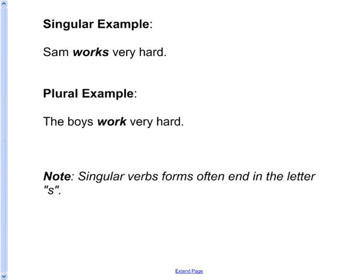Let's look at some examples. First, a singular example: Sam works very hard. In this sentence, works is the main verb and Sam is the subject. Sam is singular, so the form of the verb to work that agrees with the singular subject is works.